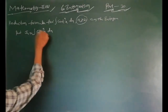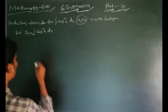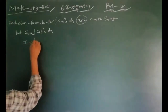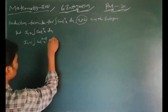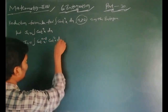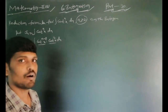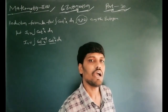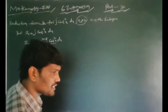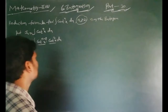First of all, in cot^n x dx, we factor out cot² x. Since bases are equal, powers are added: n minus 2 plus 2 gives n. So cot^n x equals cot^(n-2) x times cot² x.